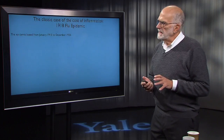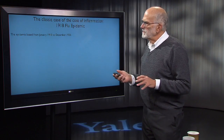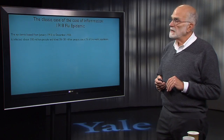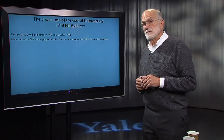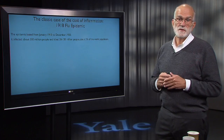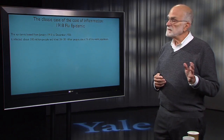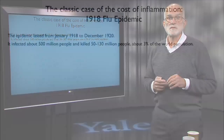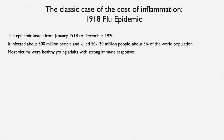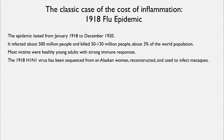The 1918 flu epidemic lasted from about January 1918 to December 1920. It infected about 500 million people, and it killed between 50 and 130 million people. At that time, that was about 3% of the world population that died in that one epidemic.